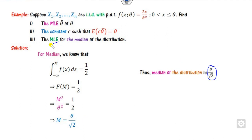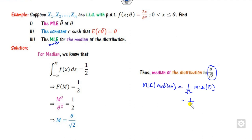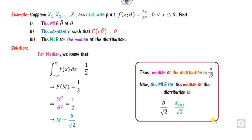Now you can find the MLE of the median. Since 1/√2 is a constant, the MLE of the median is just that constant times the MLE of theta. The MLE of theta was already computed in the first part as X(N). Therefore the MLE of the median is X(N)/√2 — that is the right answer for this problem.